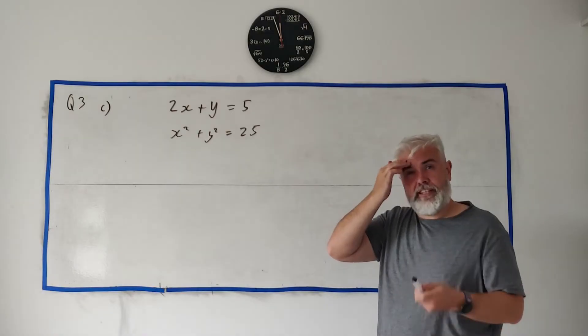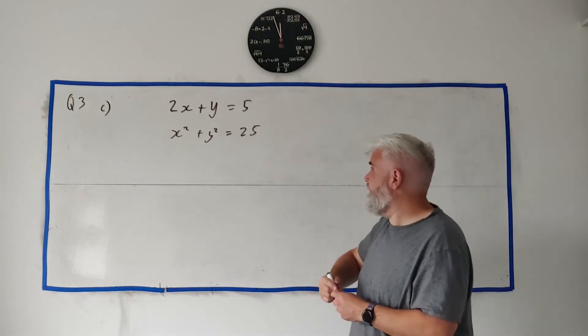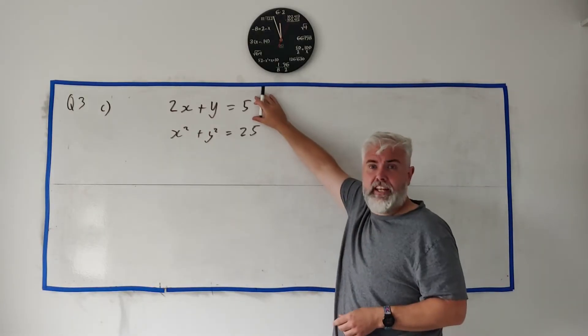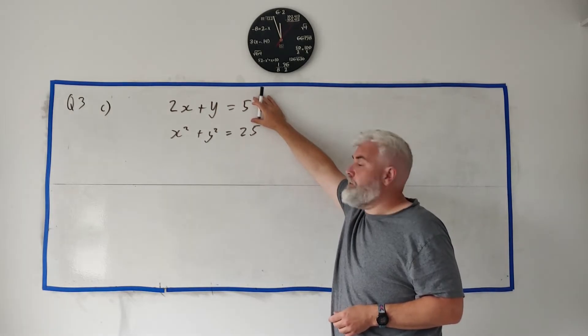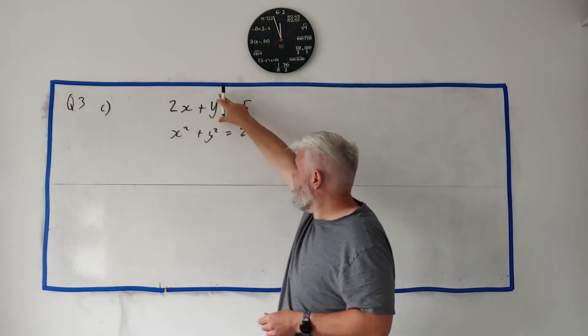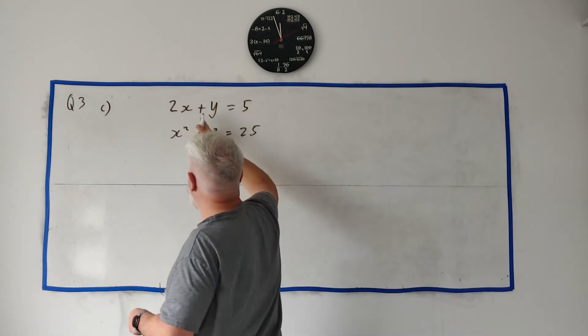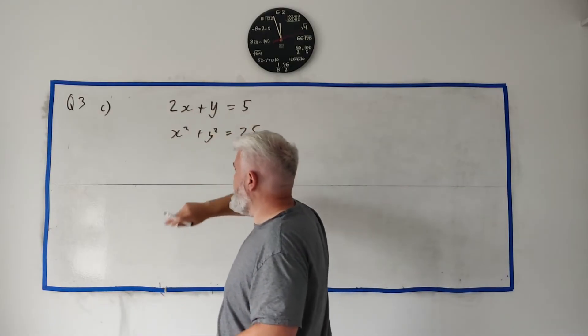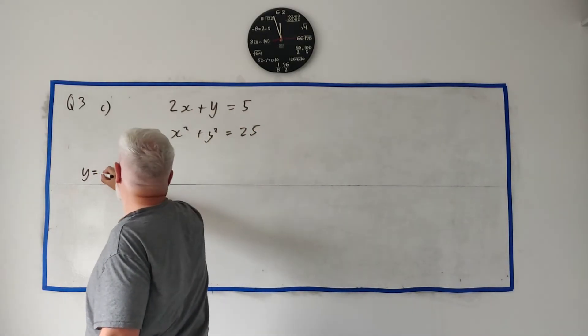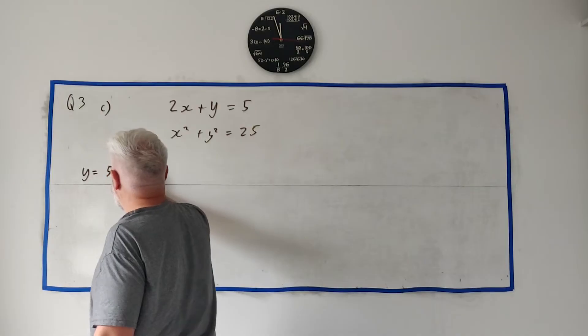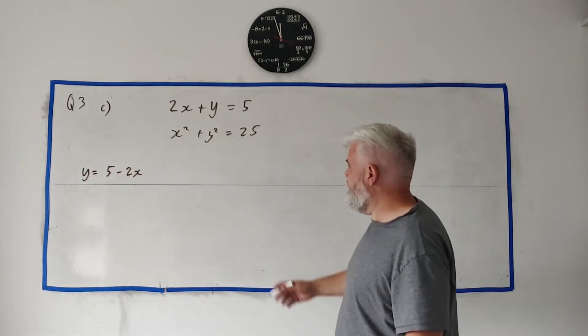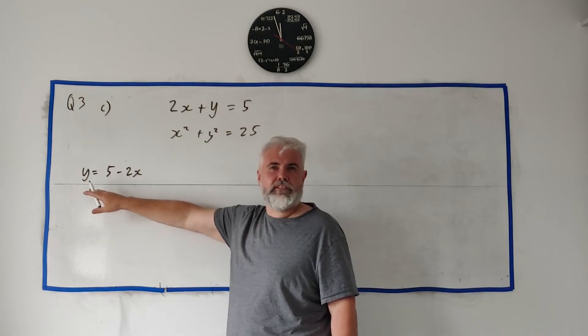So how do we solve this? They even give us a hint to this. They say use this line here and write y in terms of x. So let's take this line and let's move the 2x over. Take 2x from both sides. y is equal 5 minus 2x. That's the hint they give us to do this.